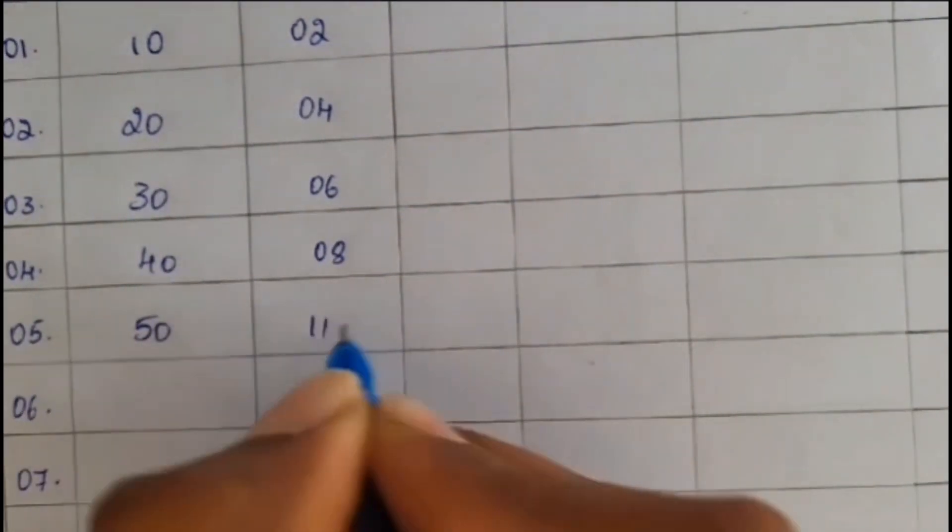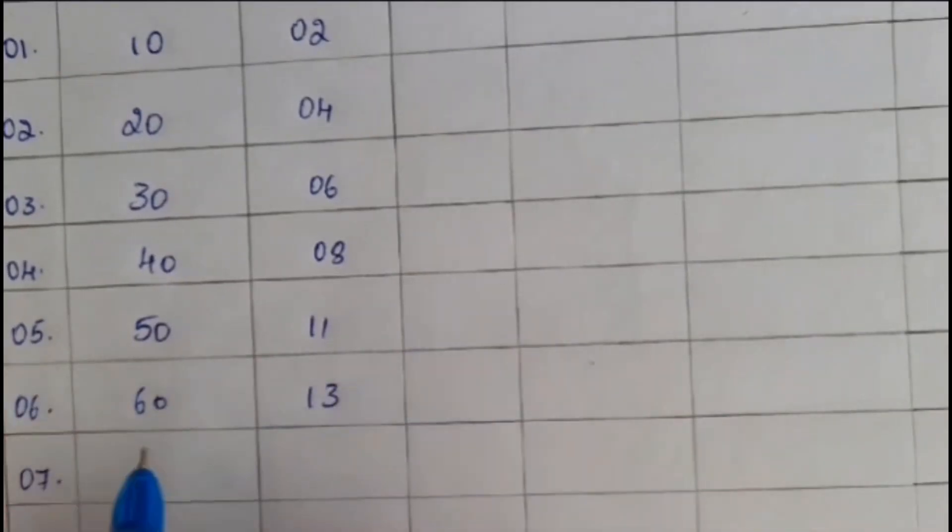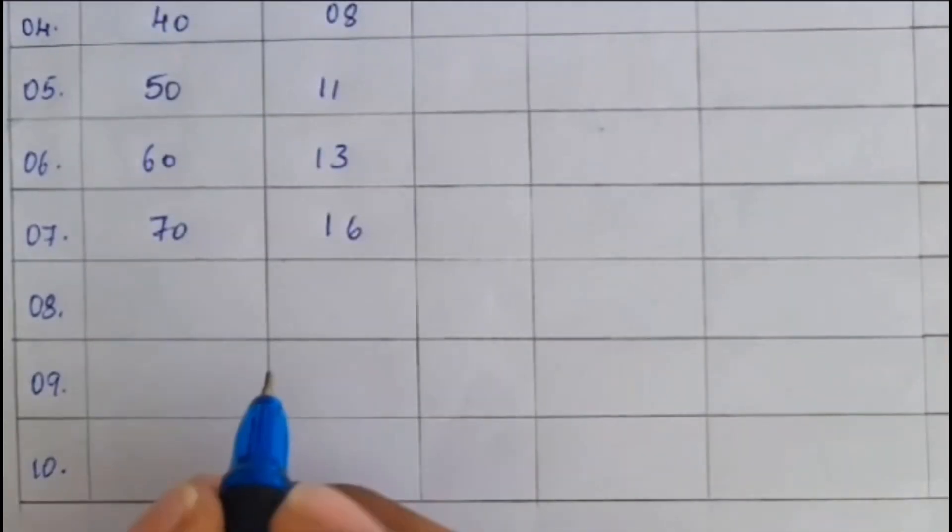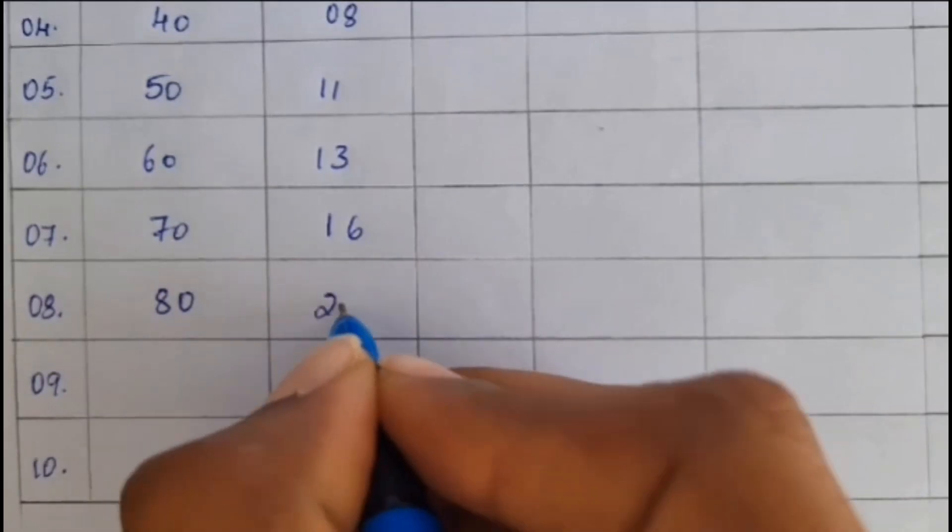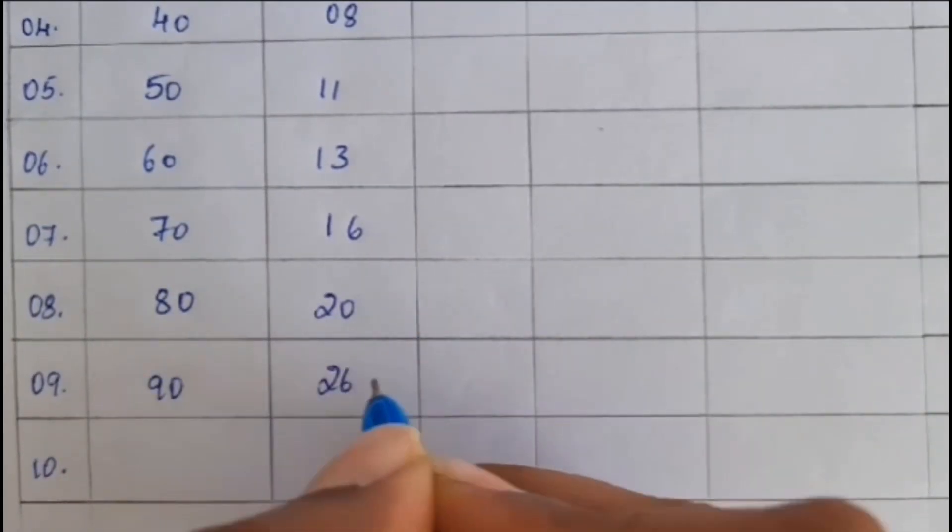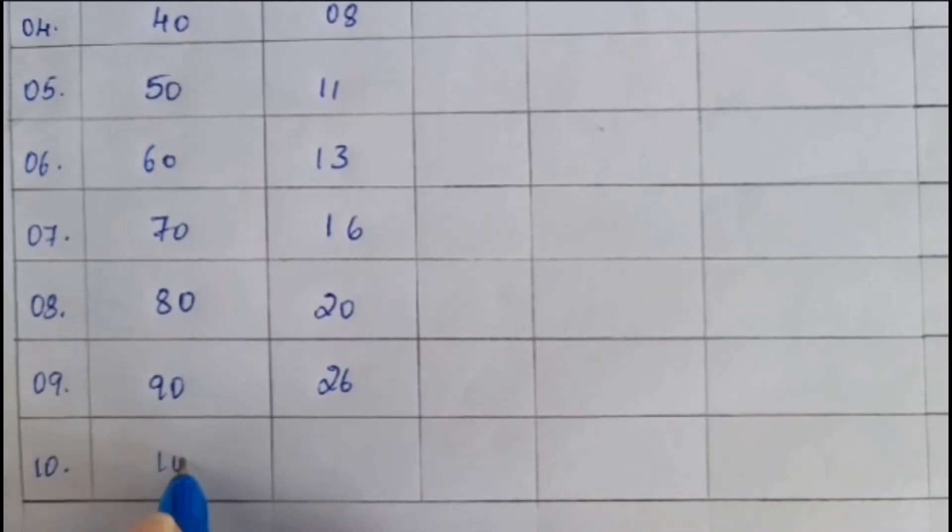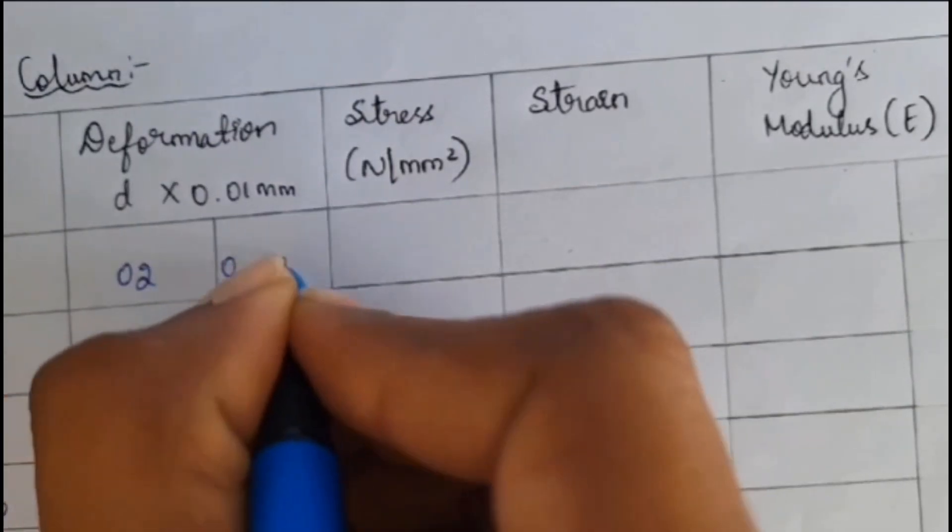For 60 kN, I will be getting 13. For 70 kN, I will be getting 16. Same thing like that. For 80 kN, I will be getting 20. For 90 kN, I will be getting 26. For 100 kN, sorry, for 10 kN, I will be getting 100. So, I have taken the deformation from the experiment or from the UTM, Universal Testing Machine.